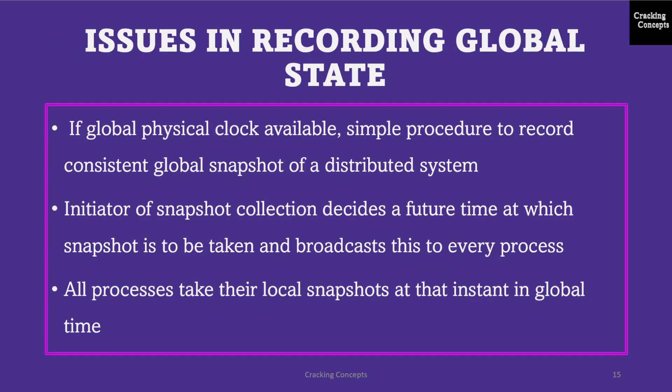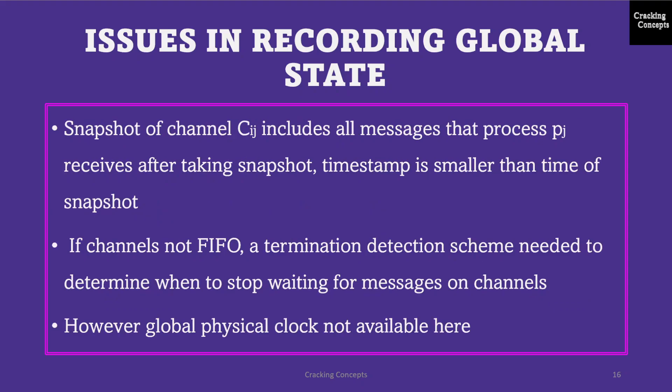Now we look into the issues in recording a global state. If a global physical clock were available, then the following simple procedure could be used: the initiator decides a future time for the snapshot and broadcasts this to every process. All processes take their local snapshot at that instant. The snapshot of channel CIJ will include all messages that process PJ receives after taking the snapshot whose timestamp is smaller than the snapshot time. All messages are timestamped with the sender's clock. Clearly, if messages are not FIFO, a termination detection scheme will be needed. However, a global physical clock is not available in a distributed system.